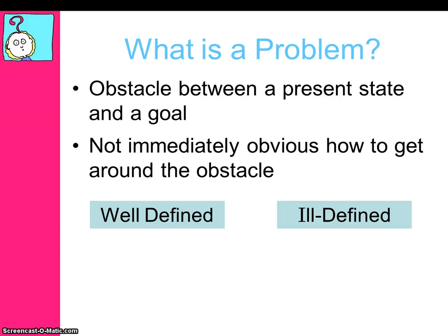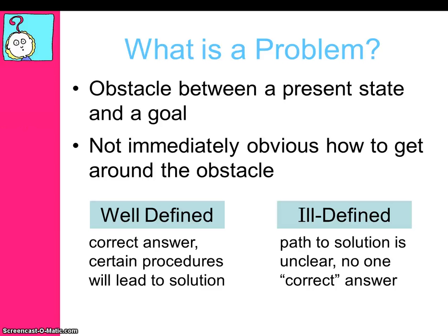You can have two different types of problems: a well-defined problem or an ill-defined problem. Well-defined problems have a correct answer — there's one correct solution at the end, and by following certain procedures you'll eventually get to that correct solution. Ill-defined problems, on the other hand, have no one correct answer, and the path to the solution is pretty unclear. Real-life problems — figuring out what you want to do with your life or changing your career — are ill-defined problems. There's no one correct goal point and you don't really know clearly how to get there.